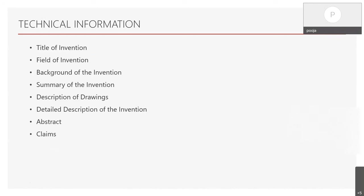The second type of data is technical information, which is basically about the invention and comprises the details associated with it. It includes various fields such as the title of invention, field of invention, background of the invention, summary of the invention, description of drawings, detailed description of the invention, abstract, and claims. We will discuss each of these particulars in detail in the coming slides.